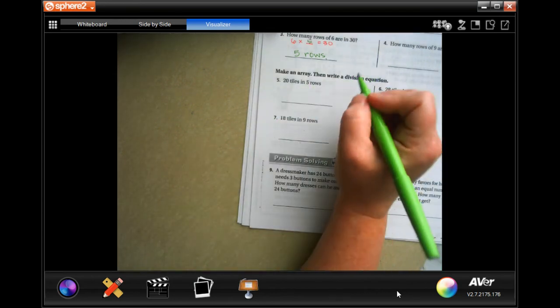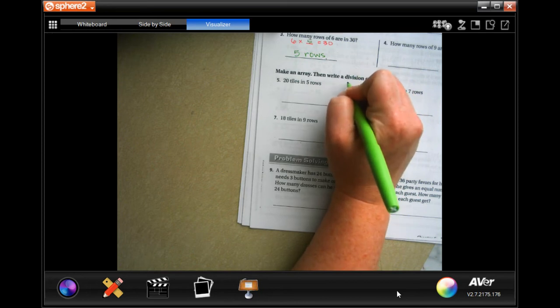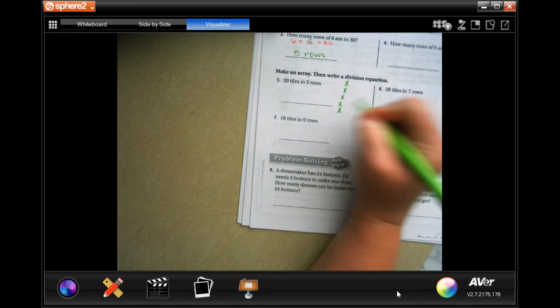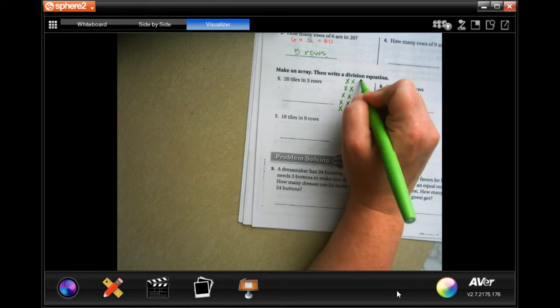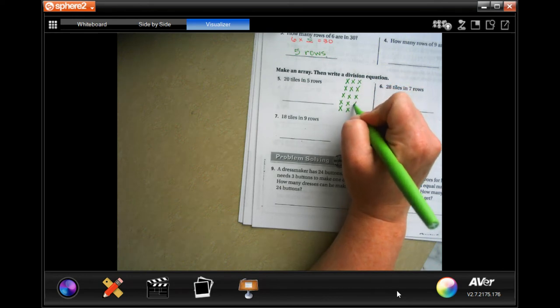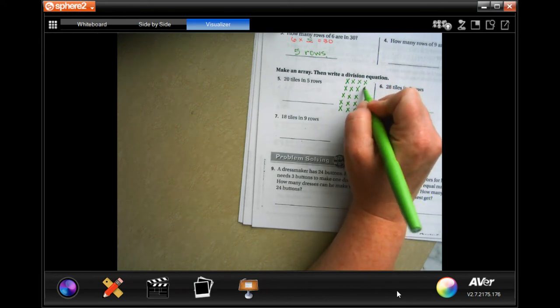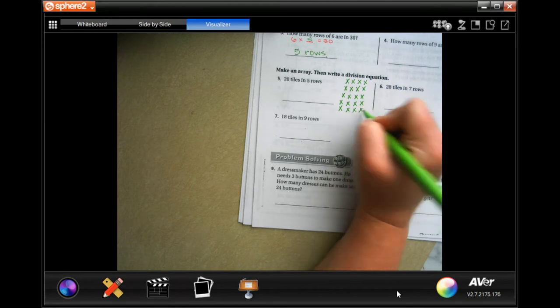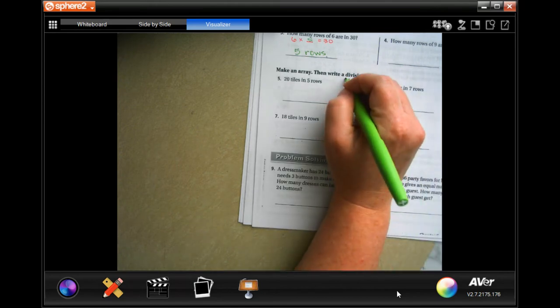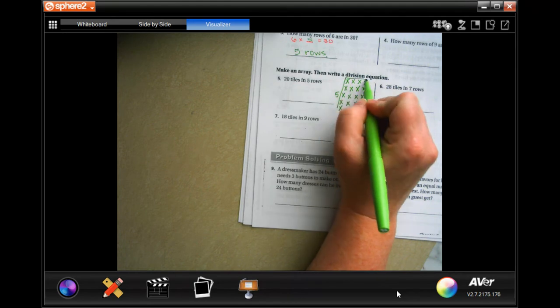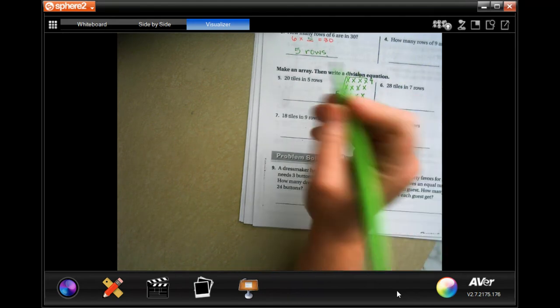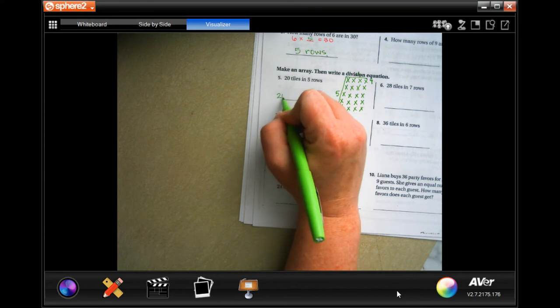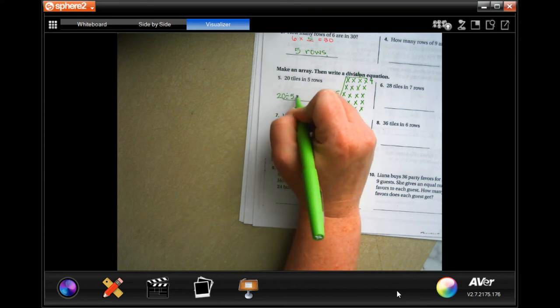Okay, you guys go ahead and do number four. And this says 20 tiles and five rows, so he wants us to make an array again. So five rows: one, two, three, four, five, six, seven, eight, nine, ten, eleven, twelve, thirteen, fourteen, fifteen, sixteen, seventeen, eighteen, nineteen, twenty. So now I have my five rows. I have four in each row. Sorry you guys can't really see that. Okay, so 20 divided by five equals four. Four.